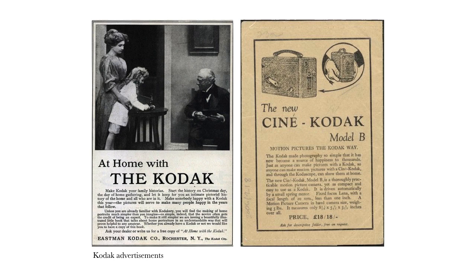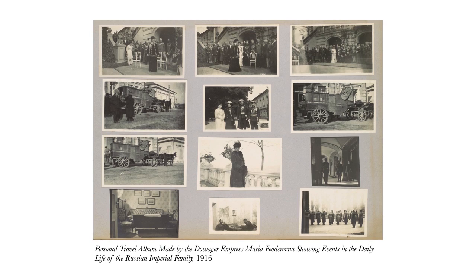Going back to this idea of photographing out of the studio — children and women being able to use cameras, not just professionals. This very much changed what you could photograph and who was able to photograph. This is a fantastic album: the personal travel album made by the Dowager Empress Maria Feodorovna, showing events in the daily life of the Russian Imperial family in 1916 — her travel pictures.